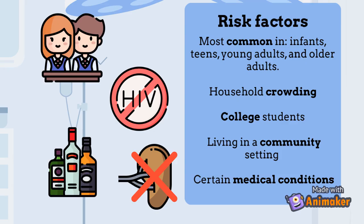Certain medical conditions can increase risk due to compromised immune systems. This includes AIDS, alcoholism, diabetes, the use of immunosuppressant drugs, and other factors that affect your immune system. In addition, having your spleen removed increases risk, and those without a spleen should get vaccinated to decrease their risk of getting the disease.